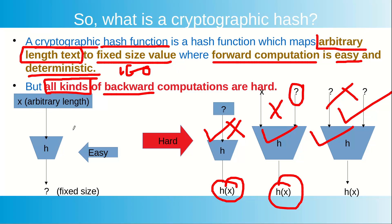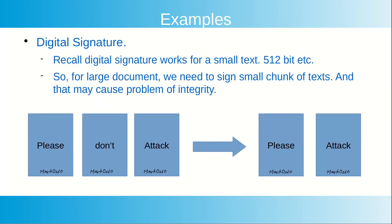By 'hard' backward computation, we mean that even if you apply all the computers in the world, you cannot come up with a pre-image or a collision within the lifetime of the universe. Now let us look at some examples of hash function applications.